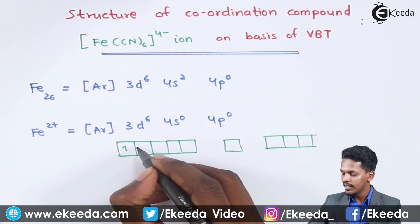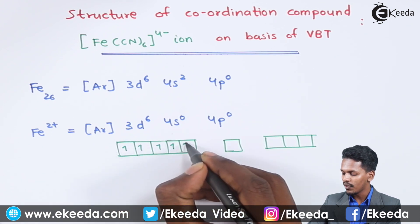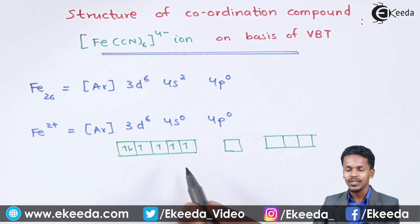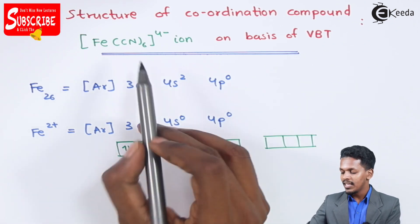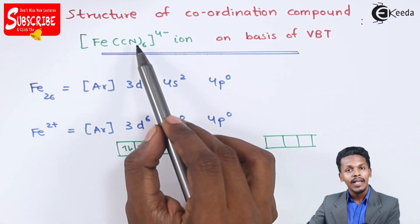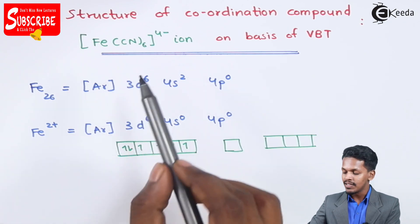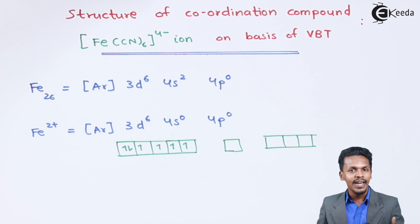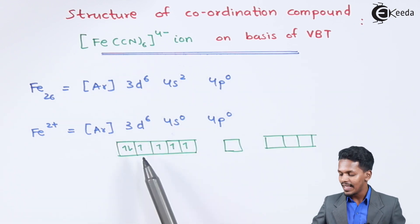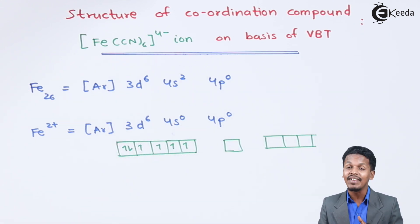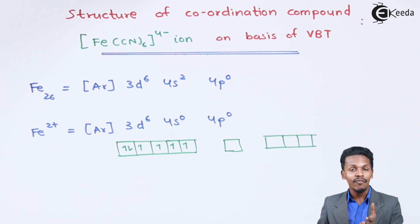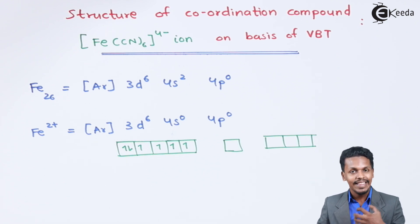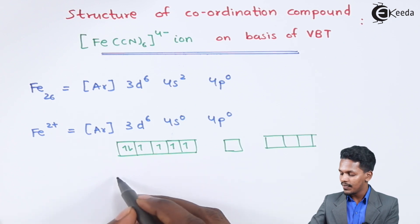We fill those six electrons based on Hund's rule. Now, six cyanide ligands are approaching the Fe. Since cyanide is a strong field ligand, the unpaired electrons will get paired up. This process is known as spin pairing, and this will determine the hybridization of Fe.